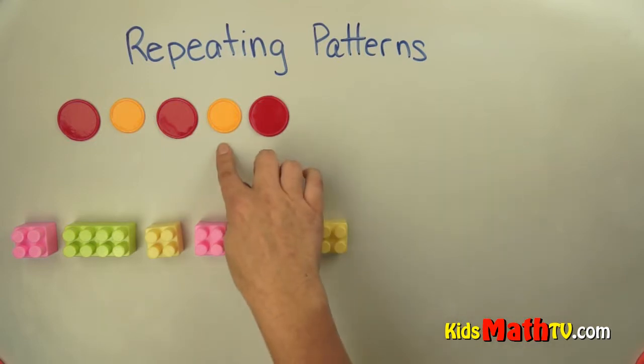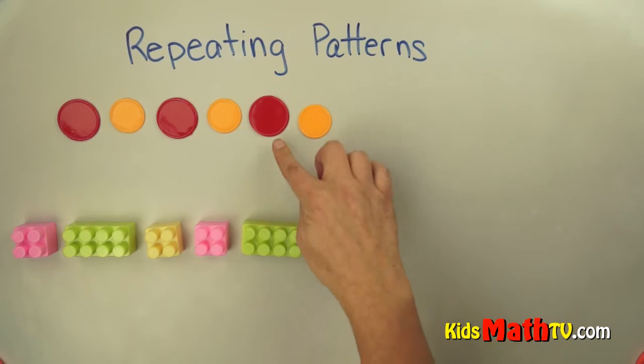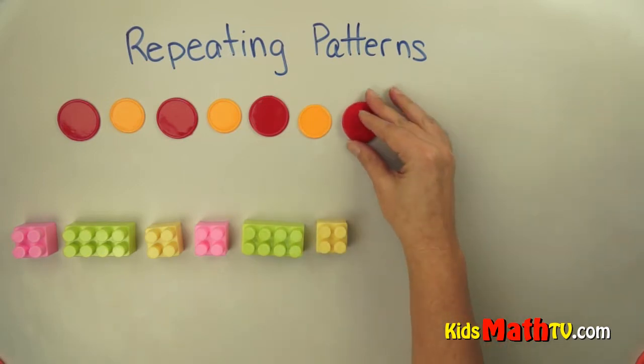if I continue that pattern, the next one after red should be another yellow. And then after yellow would be red. And I can continue that pattern.